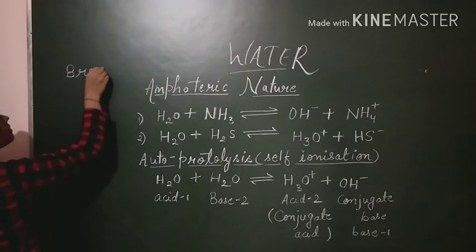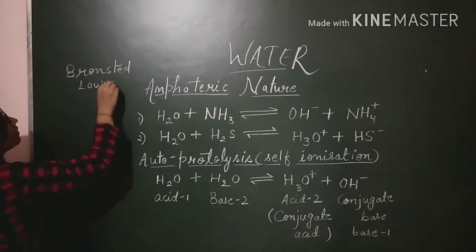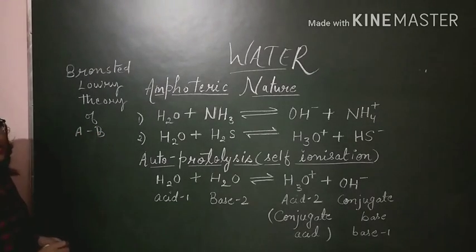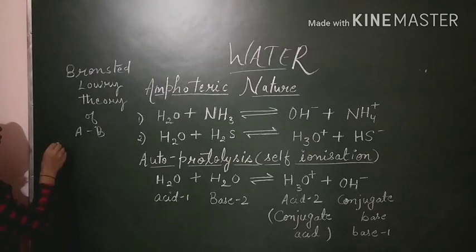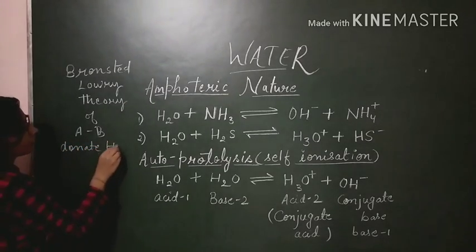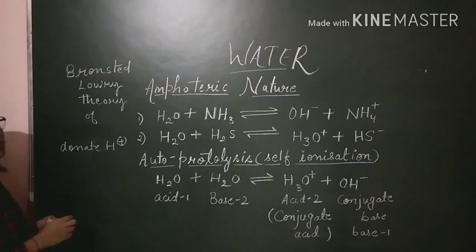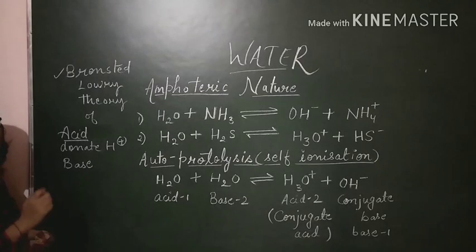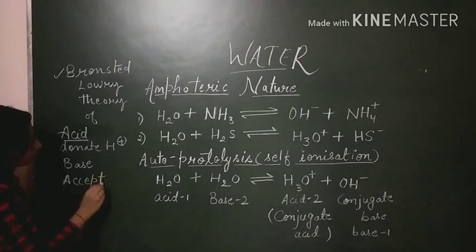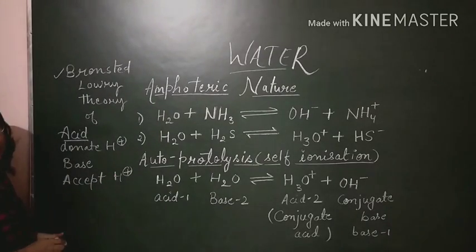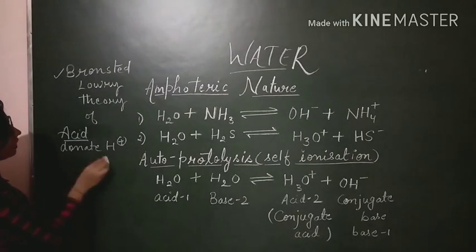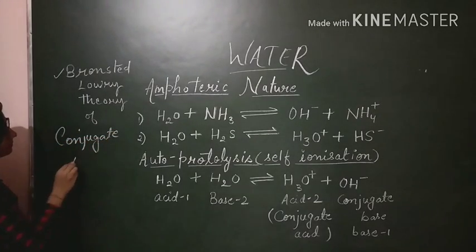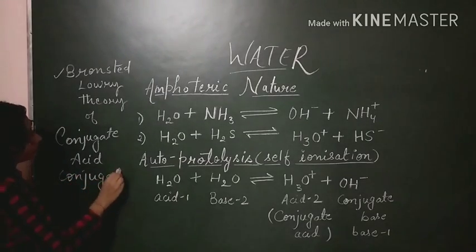Before discussing this, we must understand what acids and bases are. According to Bronsted-Lowry theory of acid-bases, an acid is a chemical species which can donate a proton. If a chemical species is able to donate a proton, it is considered an acid. And if a chemical species is able to accept H positive, that is a proton, it is considered as a base.